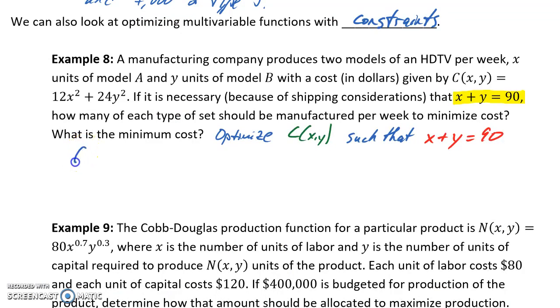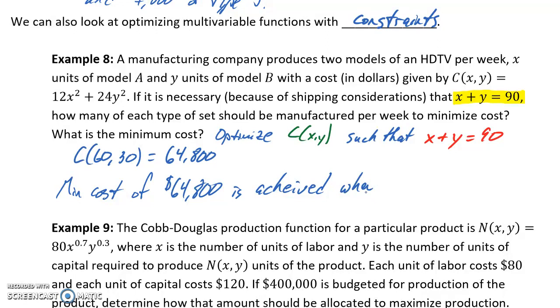So what we have is our optimized function value occurring at (60,30), and that optimized function value is 64,800, which means that our minimum cost of $64,800 is achieved when 60 Model A TVs and 30 Model B TVs are produced and sold. So a problem very similar to what we looked at in the previous two examples, except that again, we had this constraint, that we have to produce exactly 90 televisions.